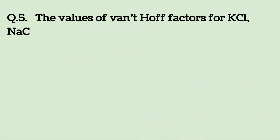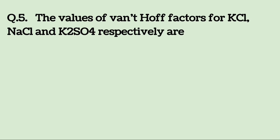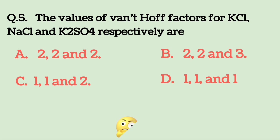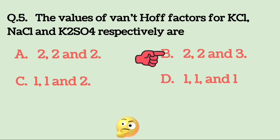The values of van't Hoff factors for KCl, NaCl, and K2SO4 respectively are: A. 2, 2, 2 and 2N, B. 2, 2, 2 and 3N, C. 1, 1, 1 and 2N, D. 1, 1, 1 and 1N. Try to solve it. The correct answer is 2, 2, 2 and 3.